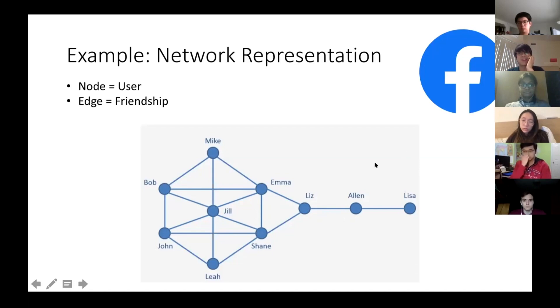I just want to make sure that everybody is on the same page, like just a quick question: how many friends does John have? Four. Yeah, there are four friends of John: Bob, Jill, Shane, and Leah.